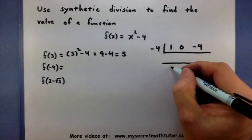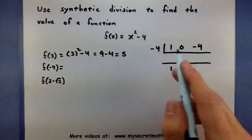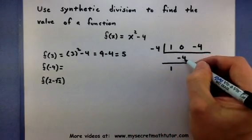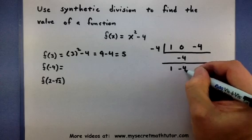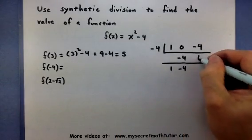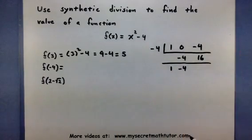Now let's run through this synthetic division process. We drop down the first number just as it is. We multiply, add the 0 and the minus 4, multiply, and of course add.